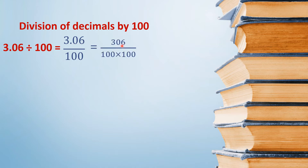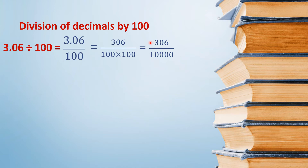तो हमने 3.06 को 306 by 100 लिख दिया. और 100 तो यहाँ already multiply में है. अब 306 by 10,000 हो गया — 100 into 100 equal to 10,000. अब इसे decimal number में लिखते हैं: 10,000 में चार zeros हैं, तो ऊपर चार digits के बाद decimal लग जाएगा, यानि 0.0306.